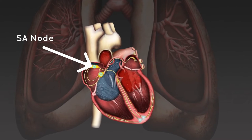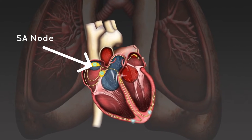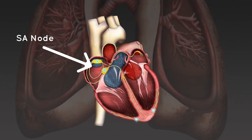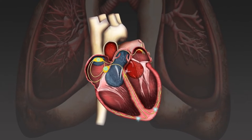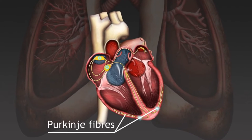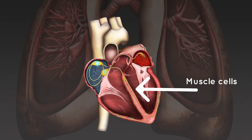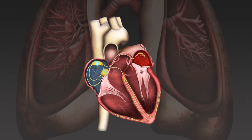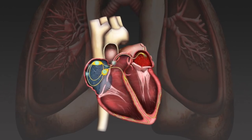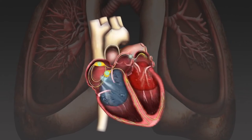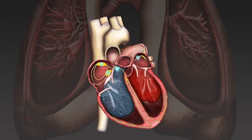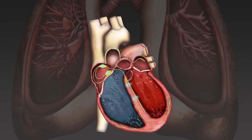6. SA node and atria. When the SA node sends an electrical impulse, it triggers the following process: the electrical signal travels from your SA node through muscle cells in your right and left atria. The signal triggers the muscle cells that make your atria contract, pumping blood into your left and right ventricles.